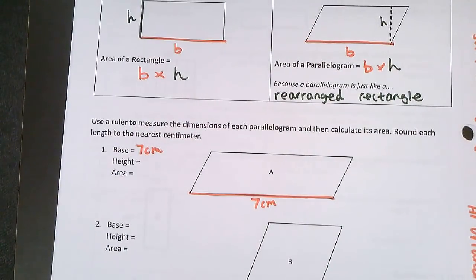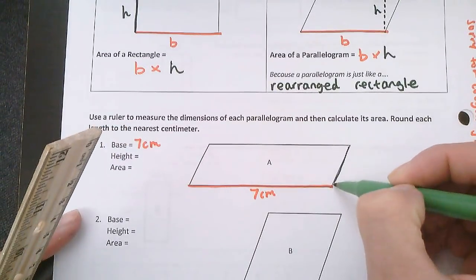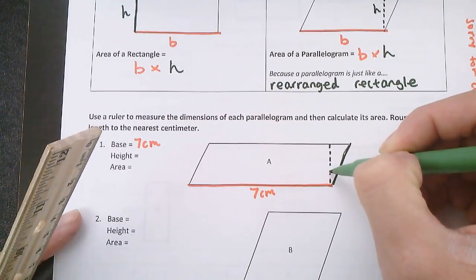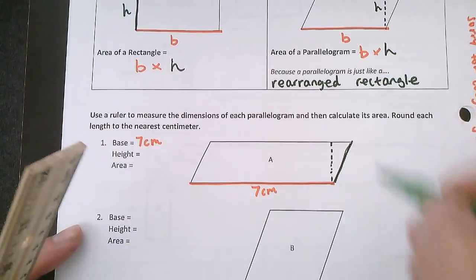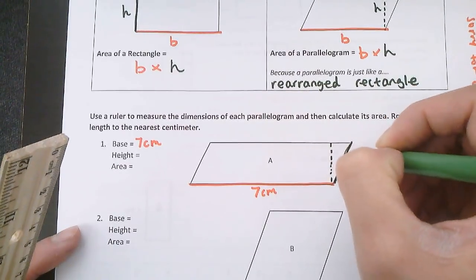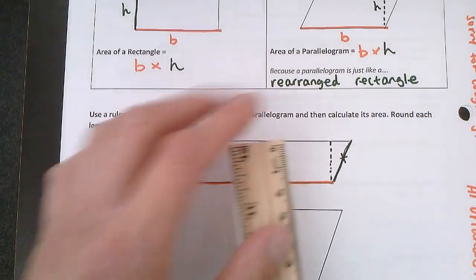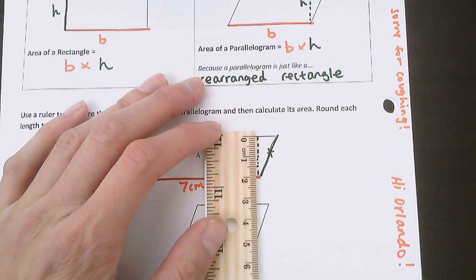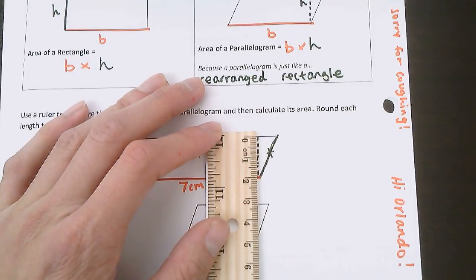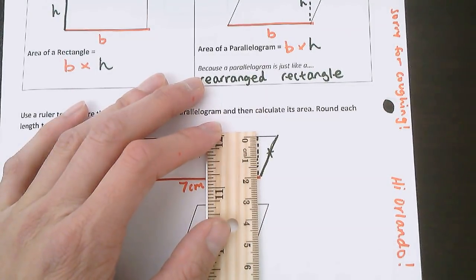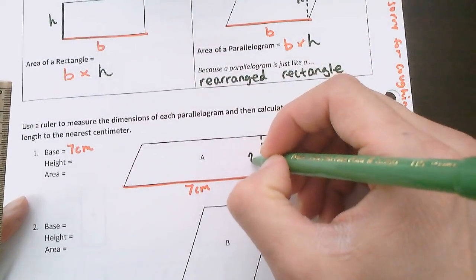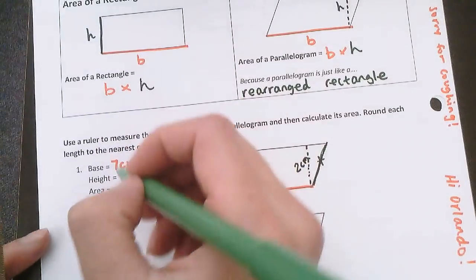My height. Remember, the height is not this diagonal line. It's if you measured straight from the top to the bottom. So this line's my height, not this one. Okay, from the top to the bottom, it's pretty close to exactly two centimeters. So my height's going to be two centimeters.